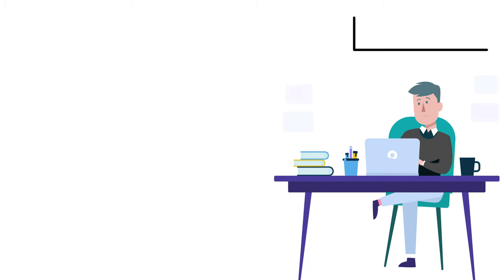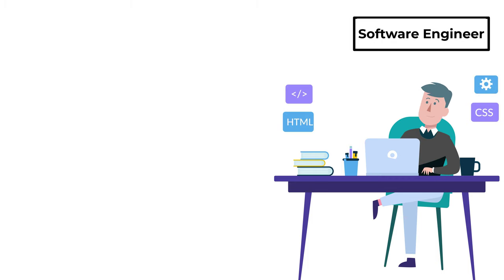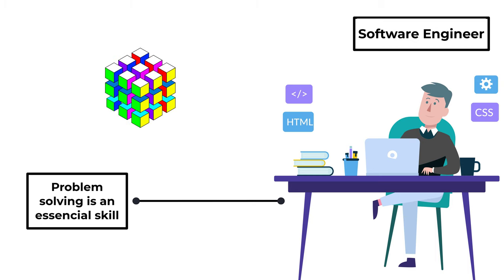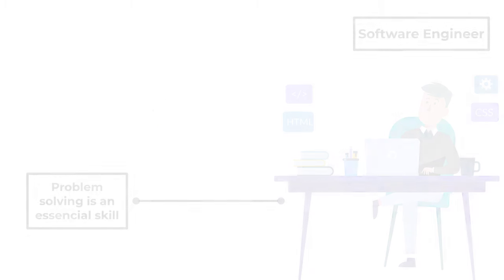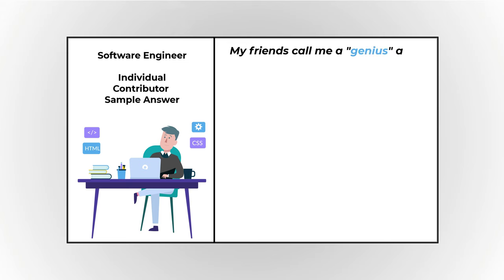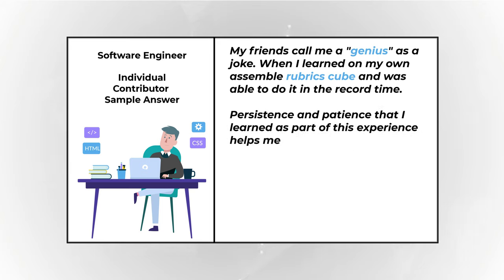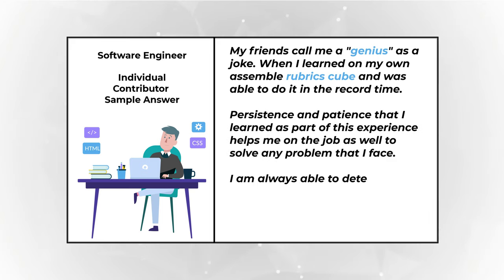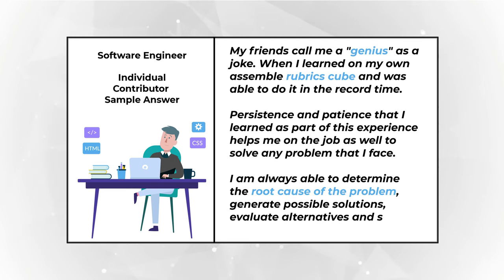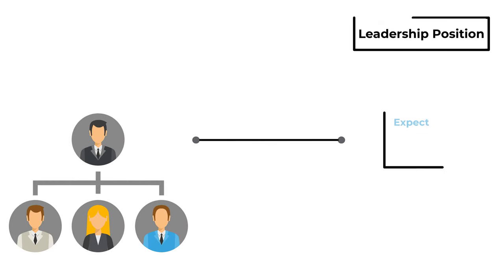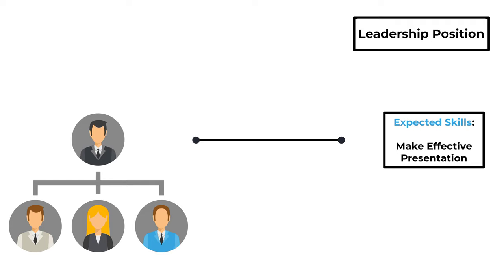Here's another example. If you're applying for an individual contributor software engineering job where problem solving is essential, you might recall that you learned how to solve a Rubik's cube on your own. Your answer might be: 'My friends call me a genius as a joke when I learned how to assemble a Rubik's cube in record time. The persistence and patience I developed helps me solve any problem — I determine the root cause, generate solutions, evaluate alternatives, and select the best outcome.'